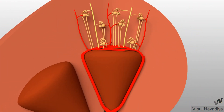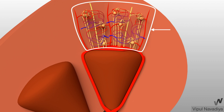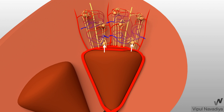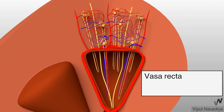Efferent arterioles again divide to form a second capillary network. The capillary network arising from efferent arterioles of cortical nephrons is different from that of juxtamedullary nephrons. The efferent arterioles of cortical nephrons form the peritubular capillary network in the cortex, which supplies the portion of tubules that lie in the cortex. The efferent arterioles of juxtamedullary nephrons descend into the medulla, form a hairpin-shaped loop, and come back to the cortex — this is called the vasa recta.